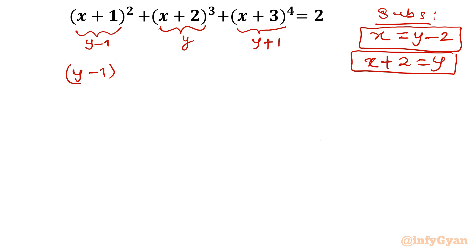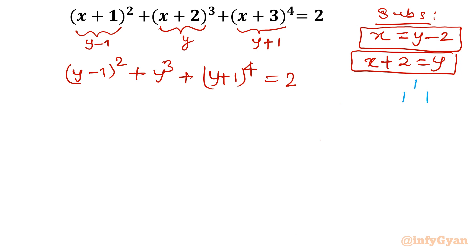So the equation becomes (y−1)² + y³ + (y+1)⁴ = 2. Now, since the power is 4, I will expand using Pascal's triangle. Pascal's triangle for the cube row is 1, 3, 3, 1, and for power 4 it is 1, 4, 6, 4, 1. I will use these coefficients for the expansion.